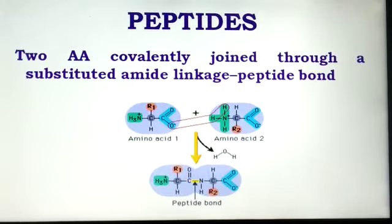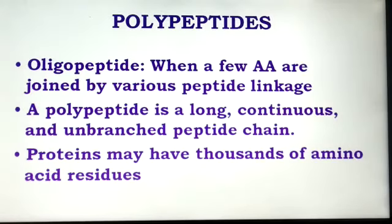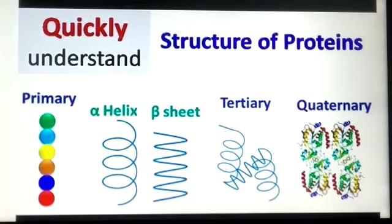When the amino group of one amino acid is combined with the carboxyl group of another amino acid, the bond formed is known as a peptide bond. A protein containing more than one peptide chain is known as a polypeptide chain. The structure of proteins is differentiated into four types: primary, secondary, tertiary, and quaternary structure.